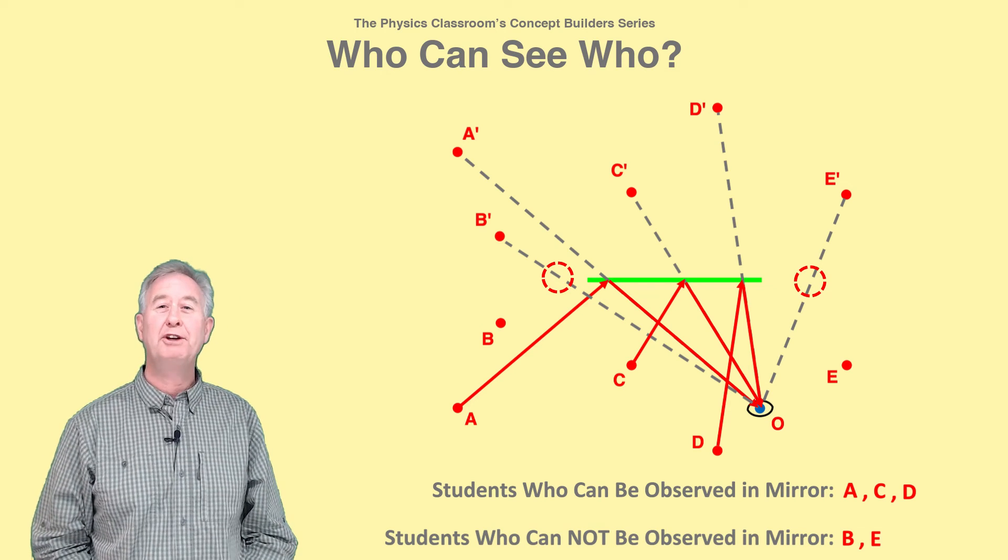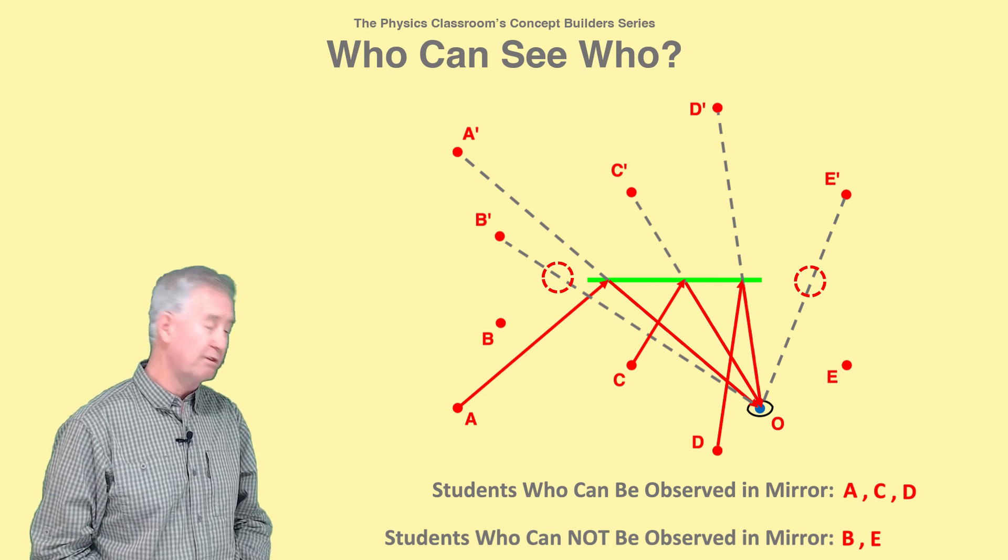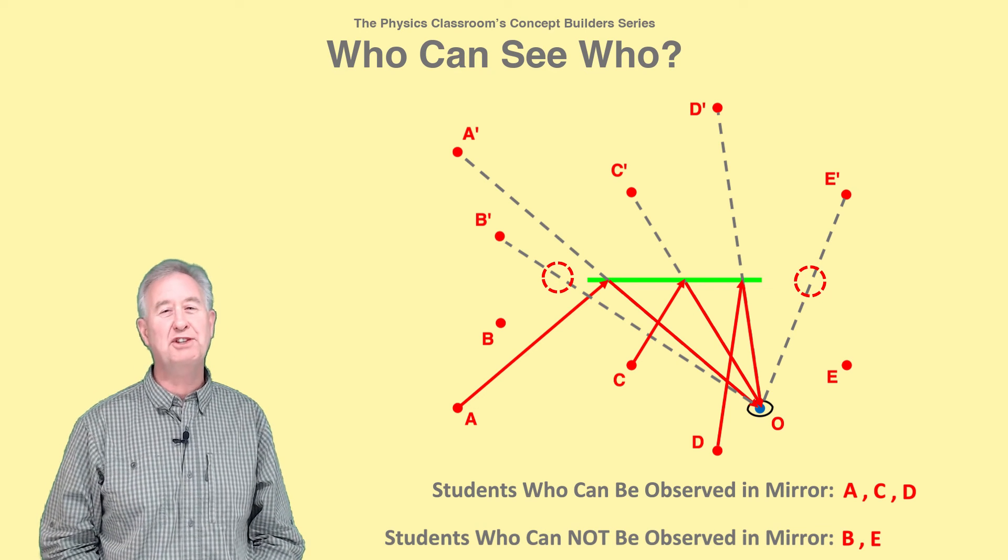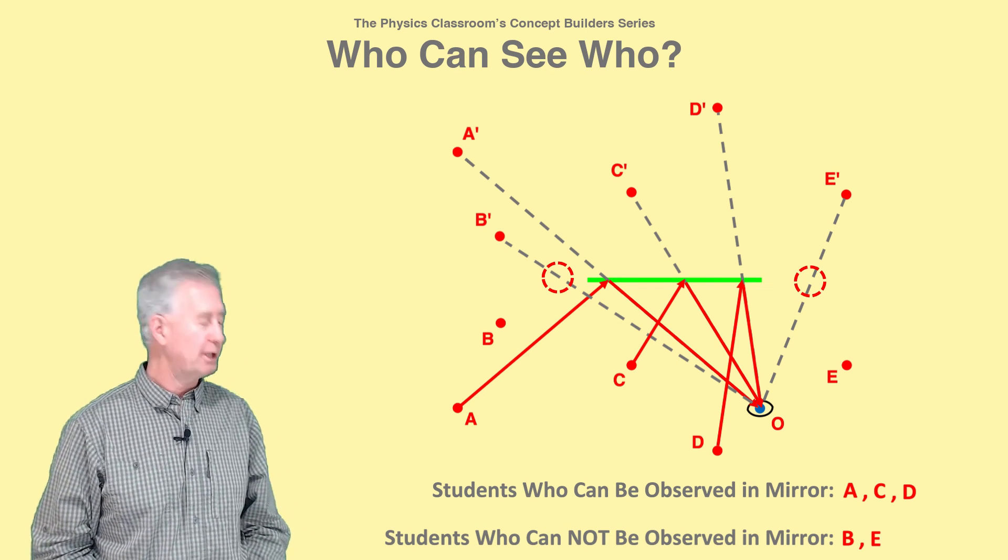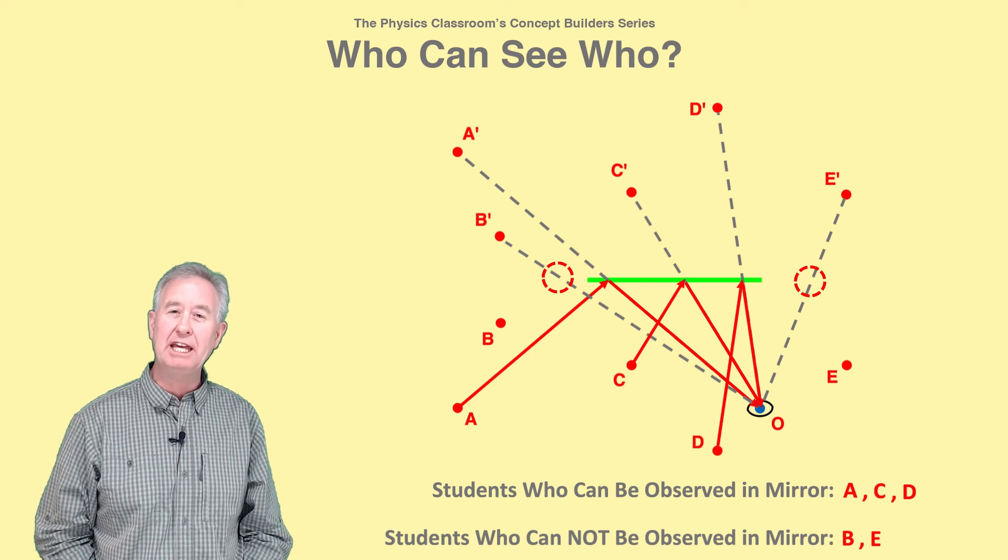And when you're done, you'll recognize that this observer can see students A, C, and D in the mirror, but cannot see students B and E.